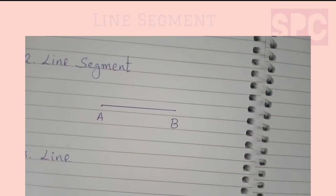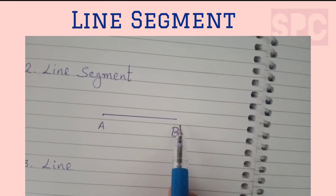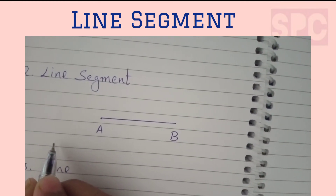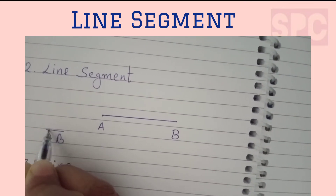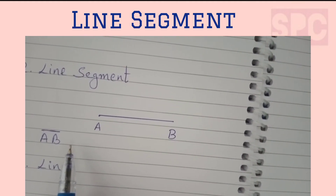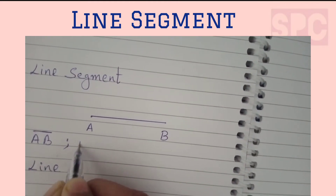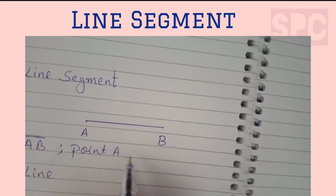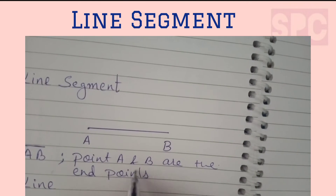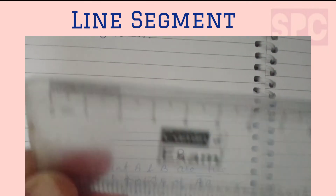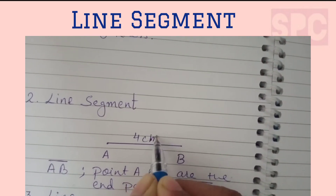Now let's move on to line segment. A straight path starting from point A to point B is called a line segment. This line segment is called line segment AB, written as AB with a line segment symbol above it. It has two end points: point A and point B. A line segment has a definite length which can be measured using a ruler — for example, 4 centimeters.